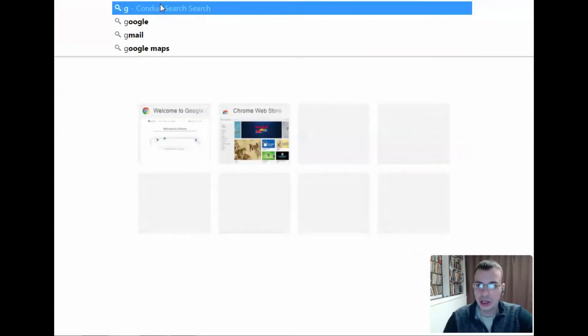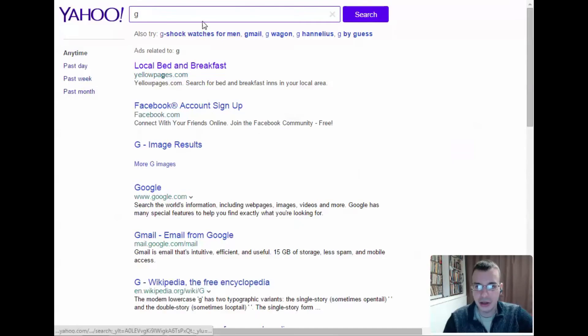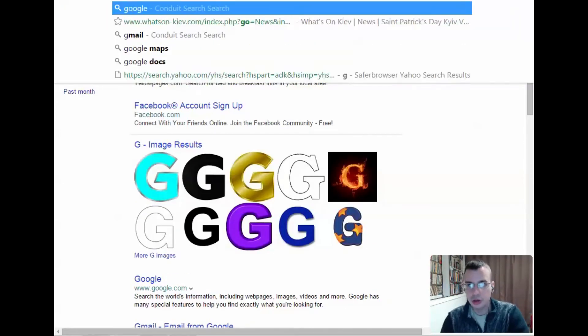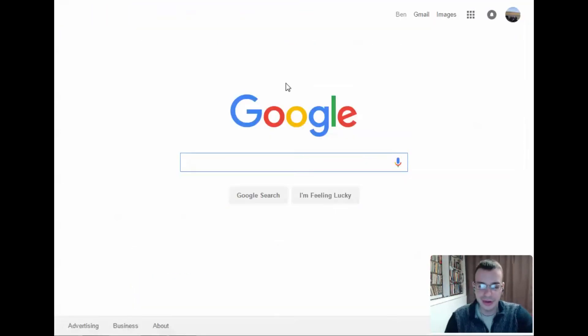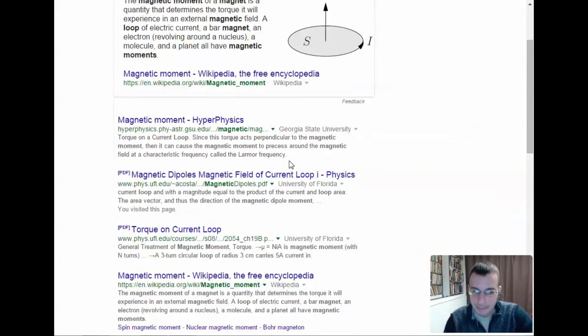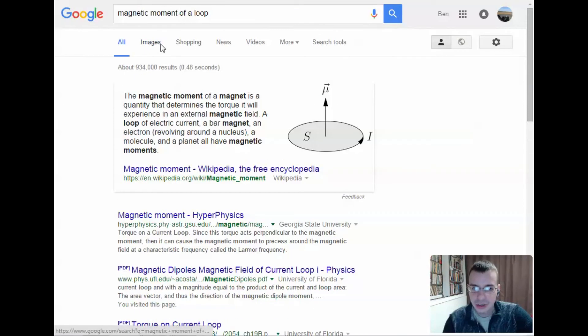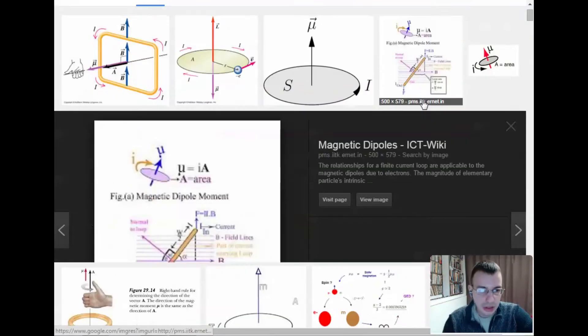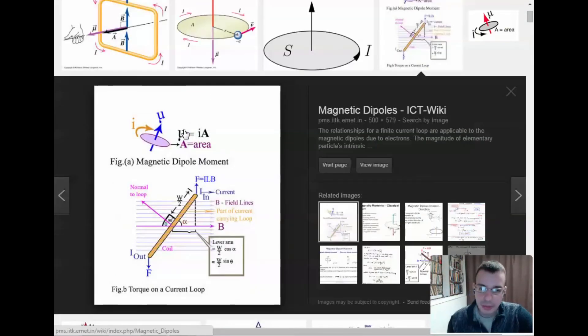Okay, let's Google this. Google.com. Darn you, Yahoo. Alright, magnetic moment of a loop. There we go. Let's just go images. There we go. Mu equals IA. That's what we want.